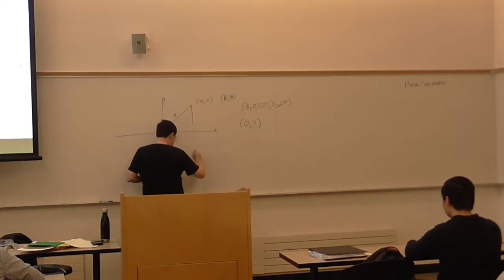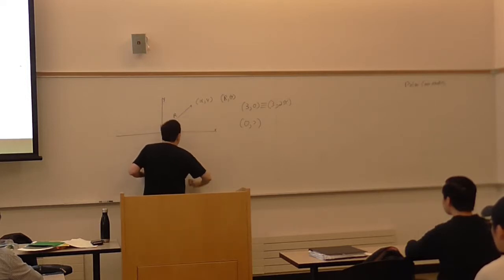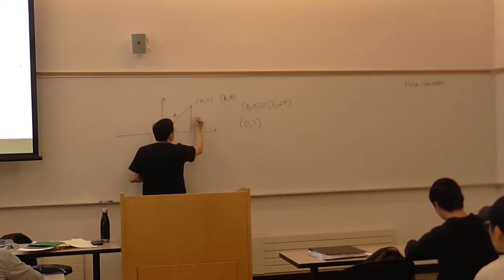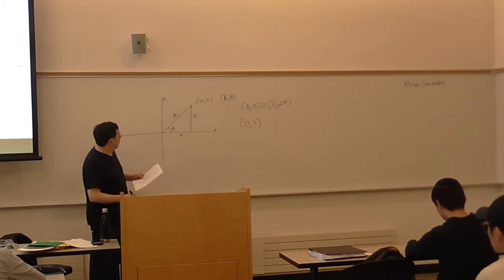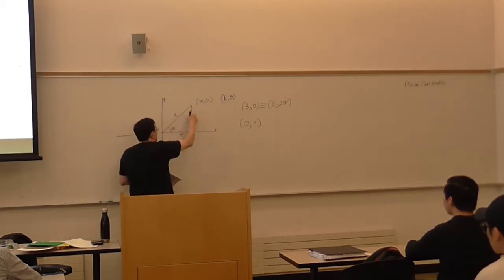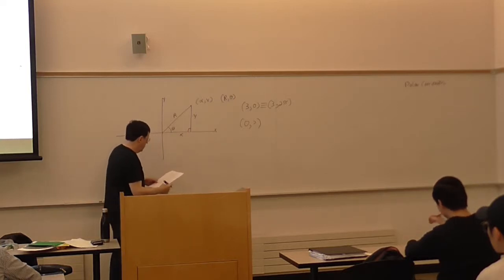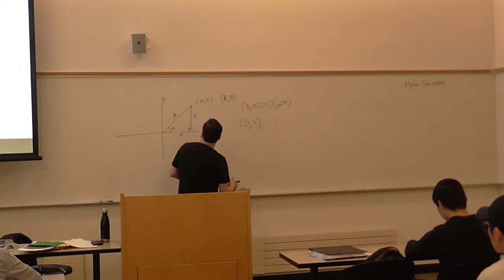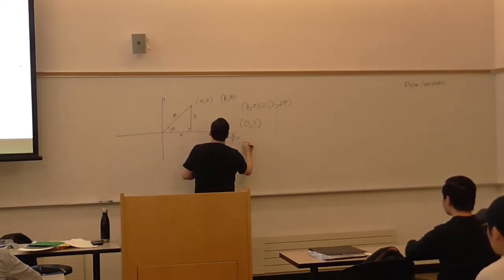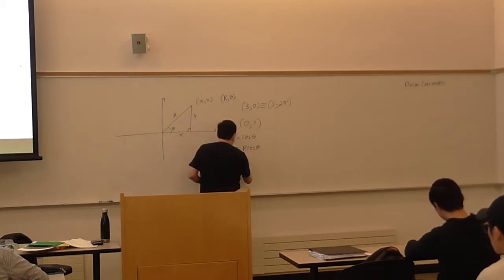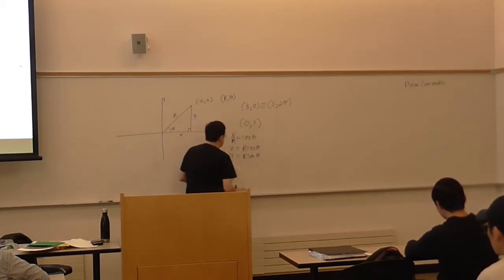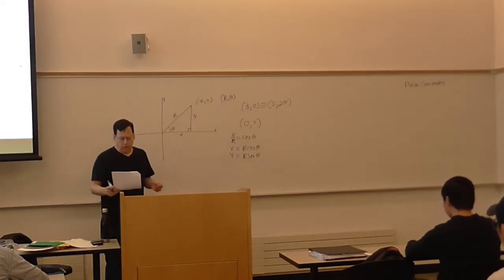Something important we need to be able to do is convert between Cartesian and polar coordinates. If we have polar coordinates and want Cartesian coordinates, we notice that we just have a right triangle. We can see right away that x/r is cosine θ, so x is just r times cosine θ. It's fairly easy to go from polar coordinates to Cartesian coordinates.